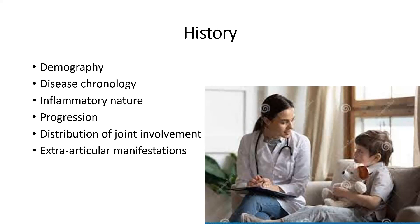Assess the distribution of joint involvement — whether it affects peripheral joints, central joints, or axial joints including the temporomandibular joint. Look for extra-articular manifestations such as weight loss, reduced appetite, kidney, liver, or eye involvement. These systemic symptoms are important clues when evaluating a child with arthritis.